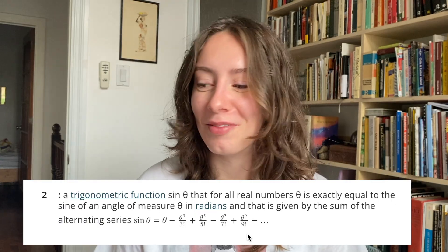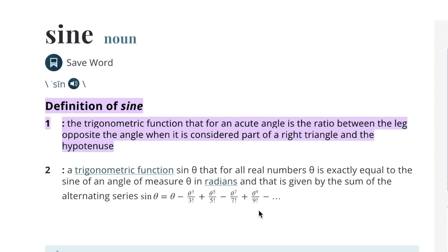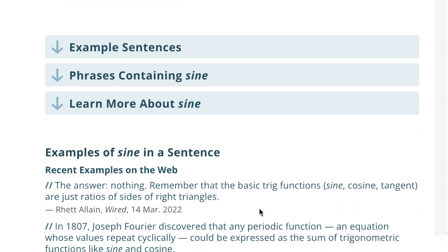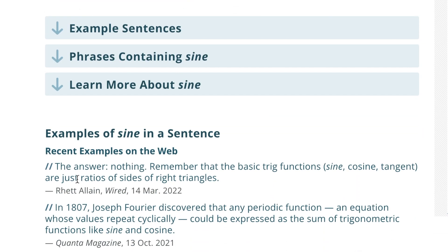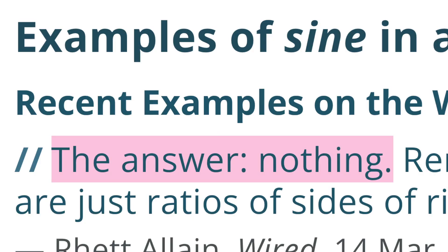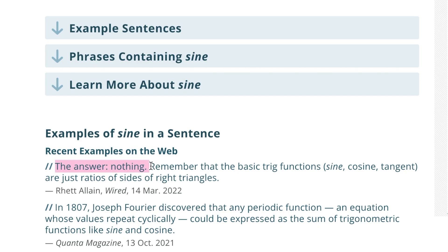That's so helpful. And then they also give an alternating series, which looks like the Taylor expansion for sine — which, who the heck knows what that is? So the recent examples on the web: what is sine? What actually is it? The answer is nothing. Just remember that you can use Soh-Cah-Toa and you'll be fine.